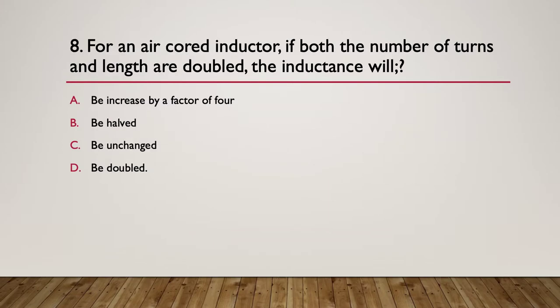Eight, for an air cord inductor, sorry inductor, if both the number of turns and the length are doubled, the inductance will do what? So this is what we would call factors affecting inductance. A, be increased by a factor of four. B be halved. C be unchanged. D be doubled.